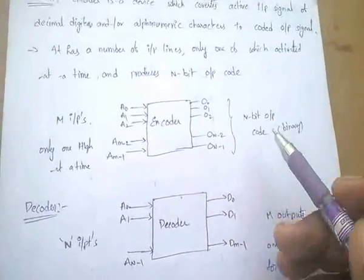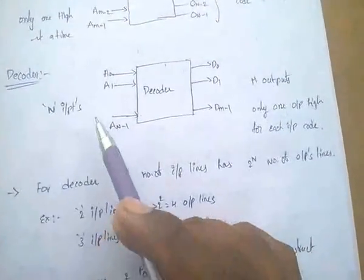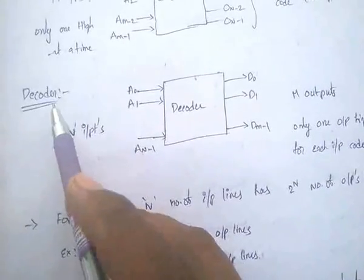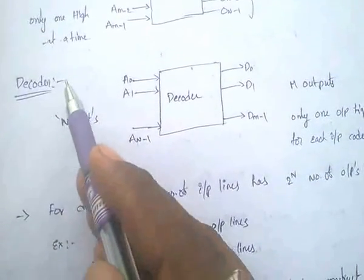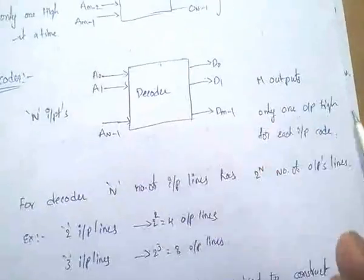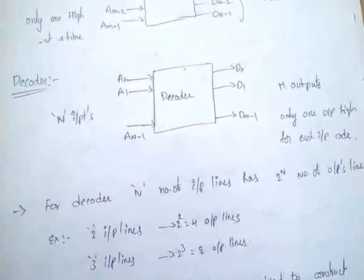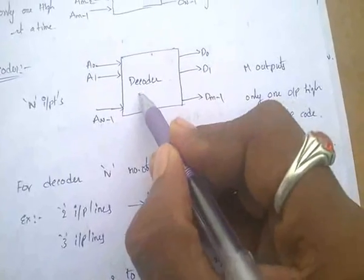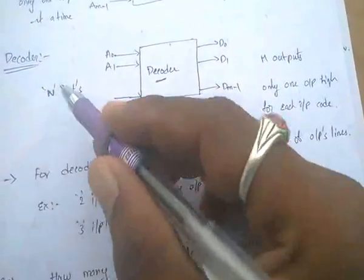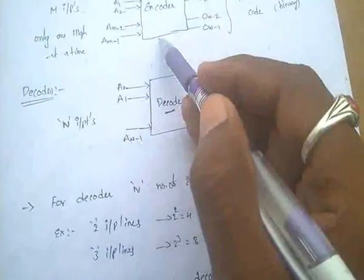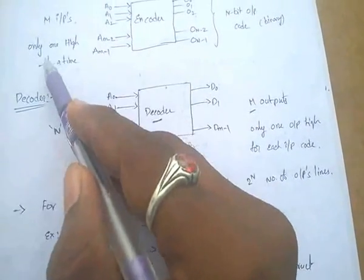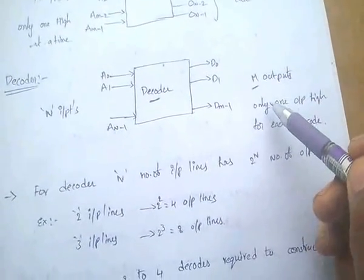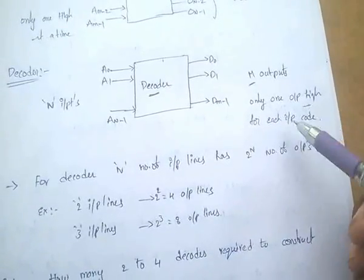In the case of a decoder, as the name suggests, it decodes — that means it converts coded form to normal form, such as binary or alphanumeric form. The decoder has n inputs and m outputs. Only one output is high at a time.